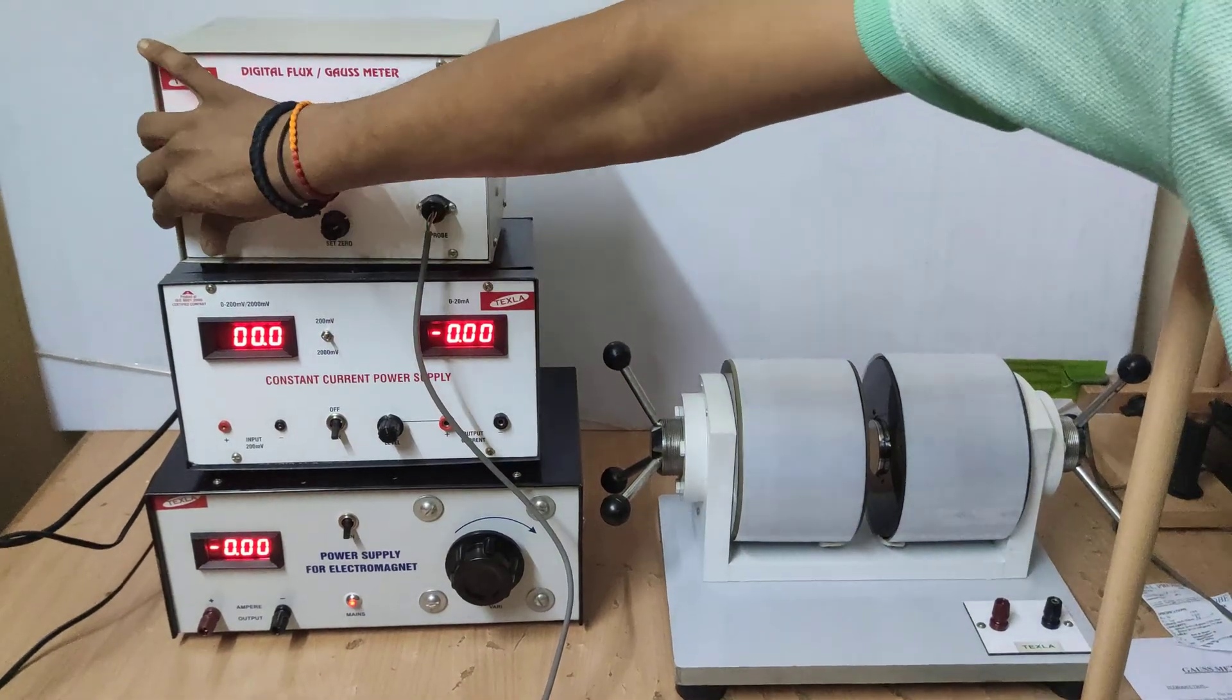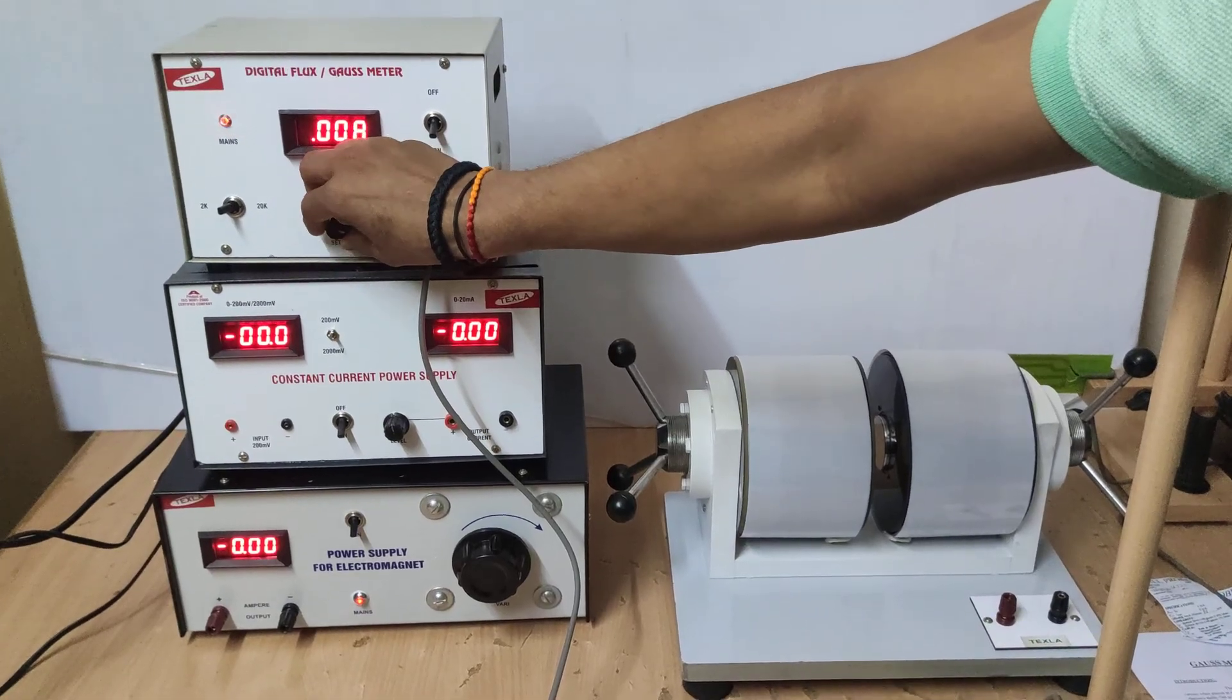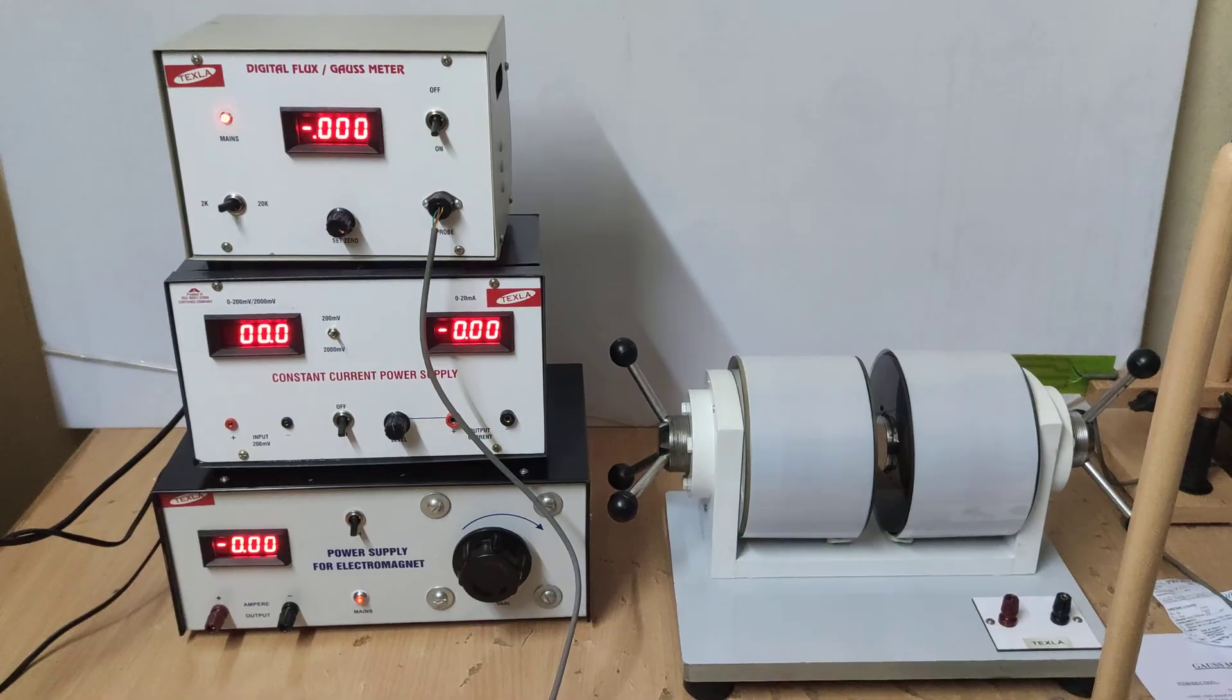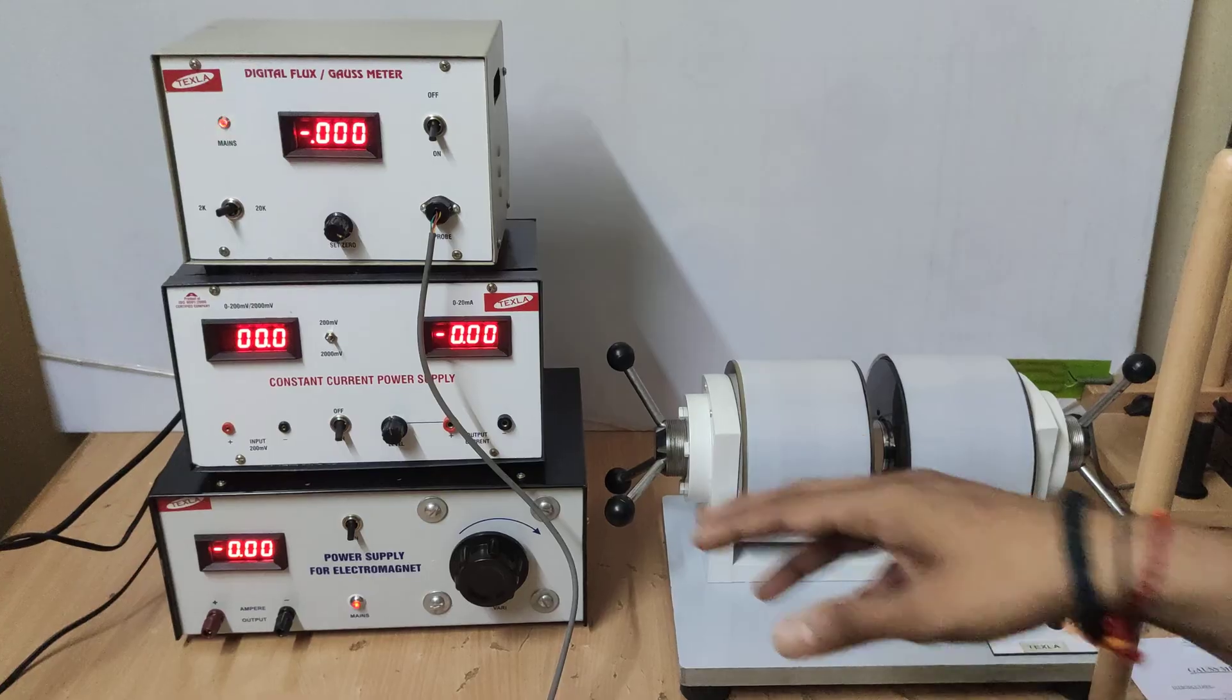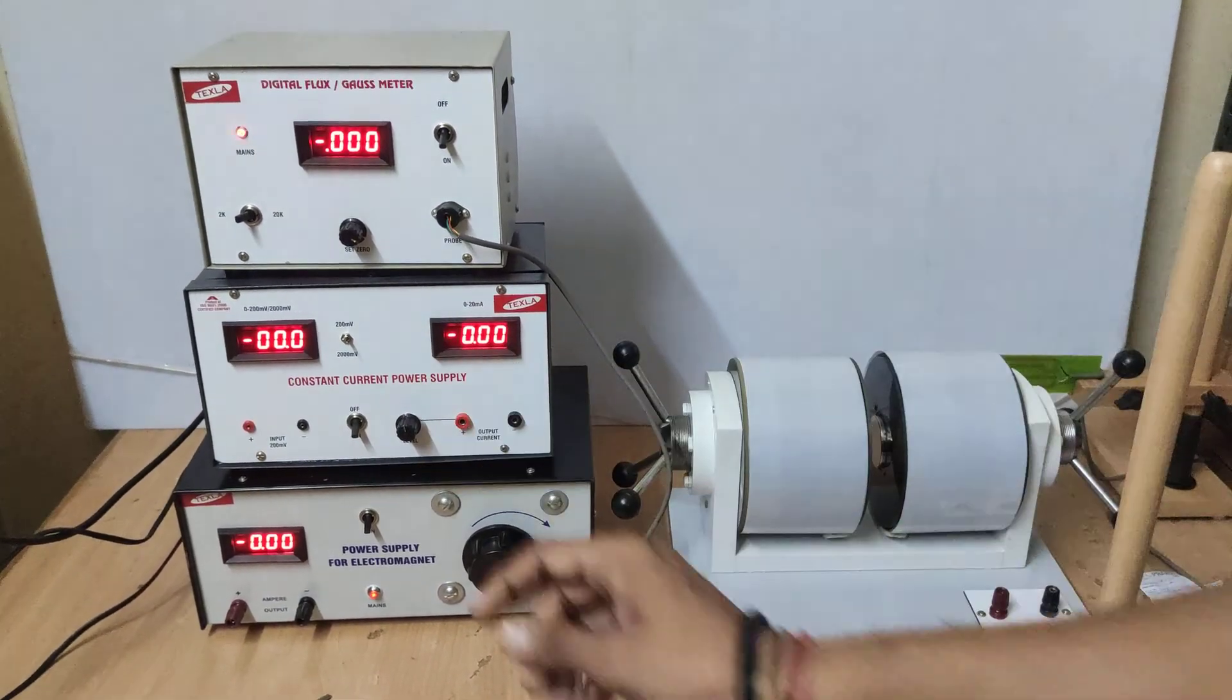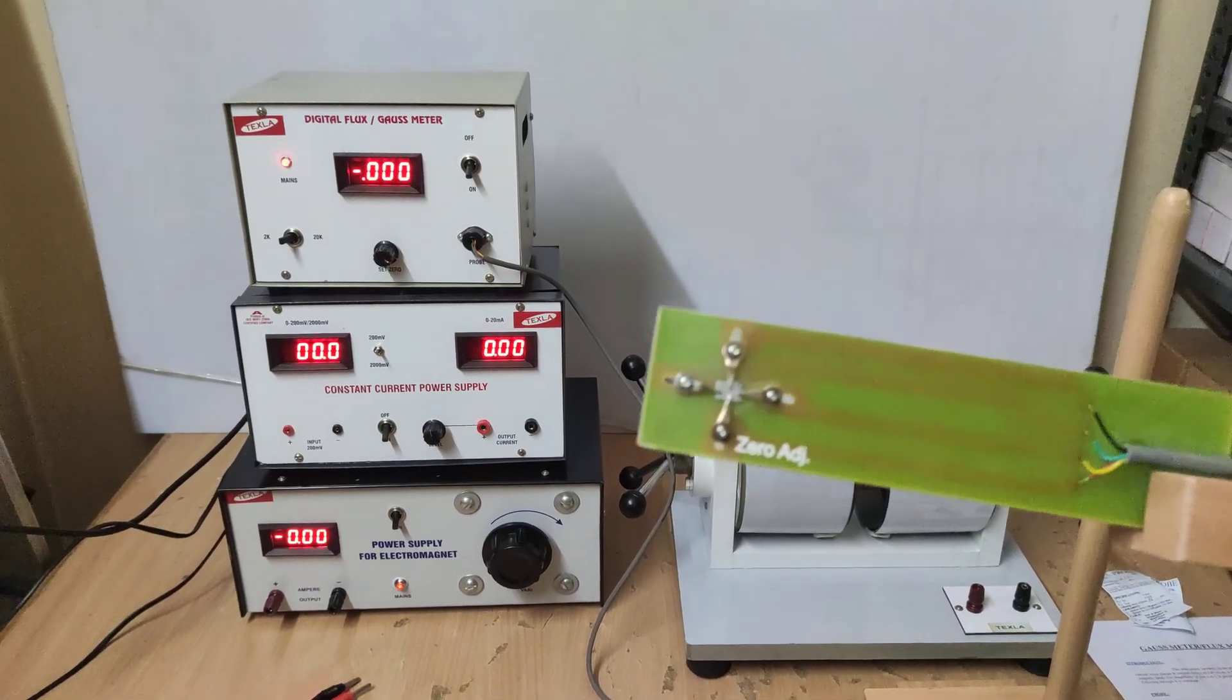After it I am choosing 2k gauss. Right now I am choosing 2k gauss only because I am not exceeding 2k gauss. This is the constant current power supply. In this, the hall probe is connected. This is a hall crystal